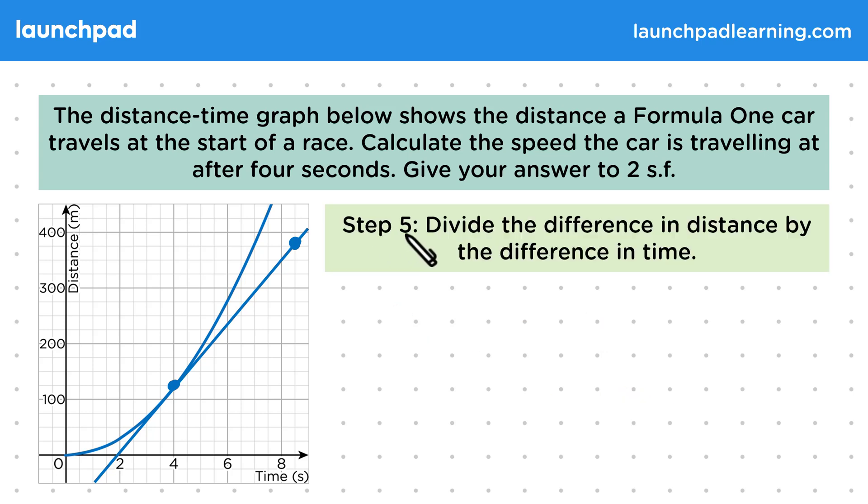In step 5, divide the difference in distance by the difference in time. Doing so will give us the gradient of our tangent. So we're dividing 260 by 4.5, which gives us 57.7 recurring metres per second. These units come from the units we used for our distance and time, which we knew because of the axis labels on the graph.